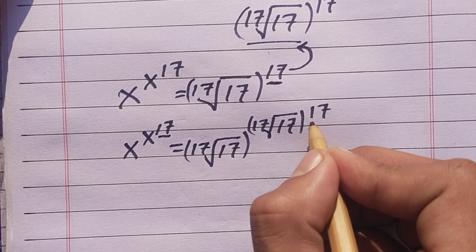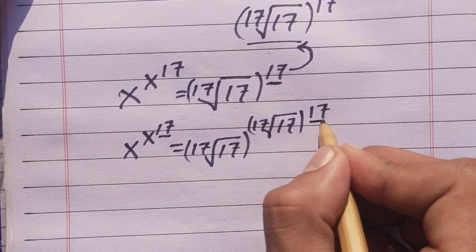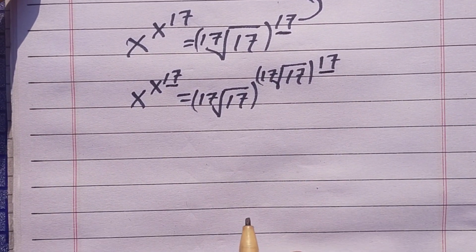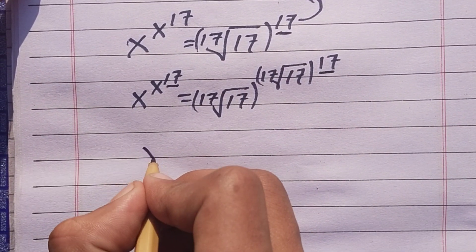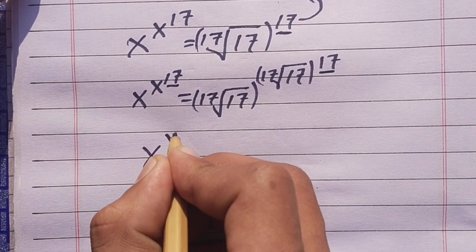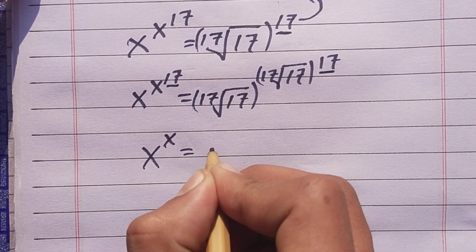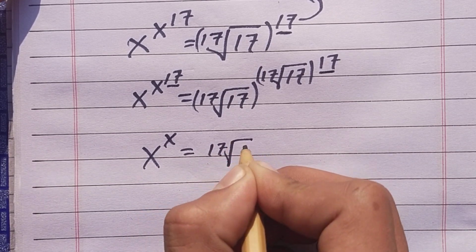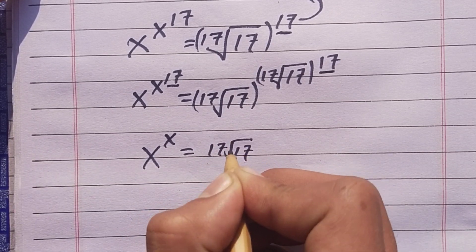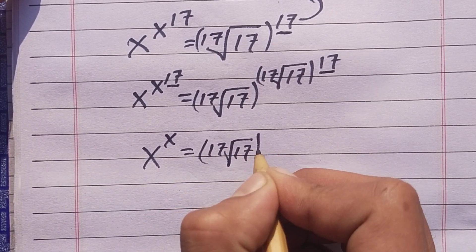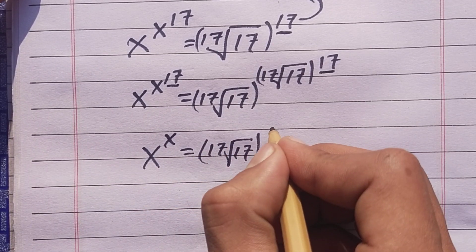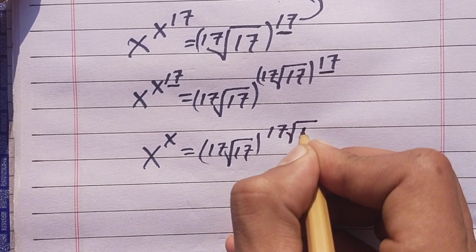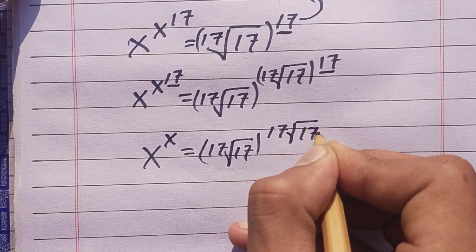Here we have 17 on this side and also on that side. So we can cancel the power 17 from both sides, and write this as x power x is equal to the 17th root of 17, raised to the power of the 17th root of 17.